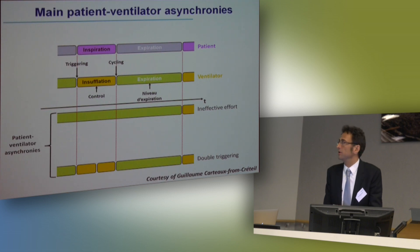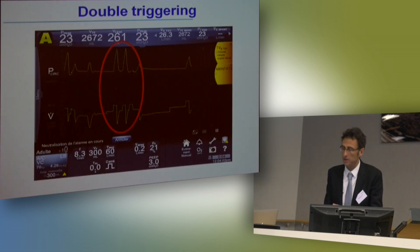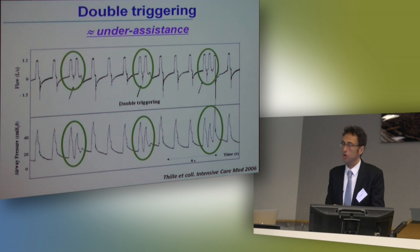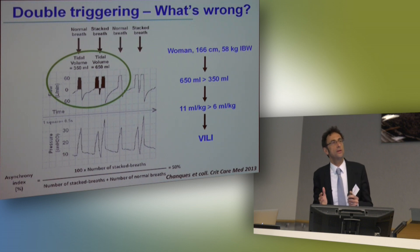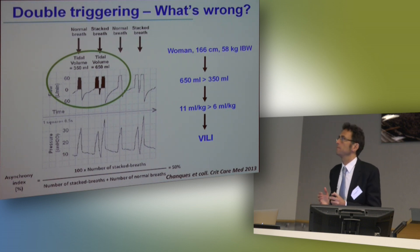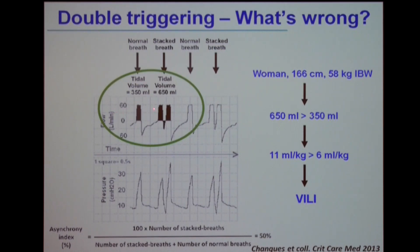The second main patient-ventilator asynchrony is double triggering: the patient inspires and generates two cycles. The first problem is straightforward. If you have set 350 ml of tidal volume but the patient takes two cycles and receives 650 ml — for a woman of 166 cm, 58 kg ideal body weight, where you chose 6 ml/kg — the patient actually receives 11 ml/kg. This creates a risk of ventilator-induced lung injury (VILI).